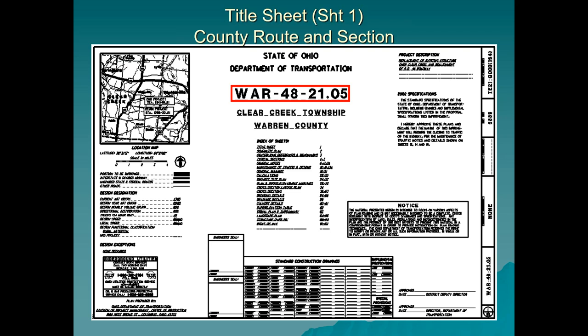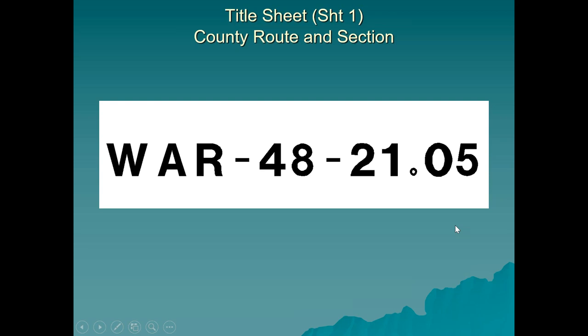This is the first sheet I'm going to cover — it's called the Construction Title Sheet. At the top of each slide I have put the sheet number so you can reference the plans. We're on sheet one — construction plans. I want to cover what's called our County Route and Section — one of our project identifications. There are 88 counties in the state of Ohio, and the first part of the abbreviation is the county name: 'WAR' for Warren County.